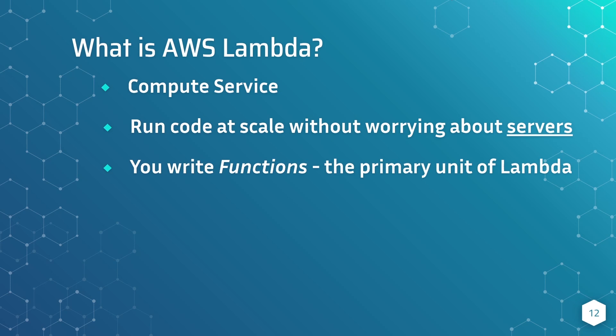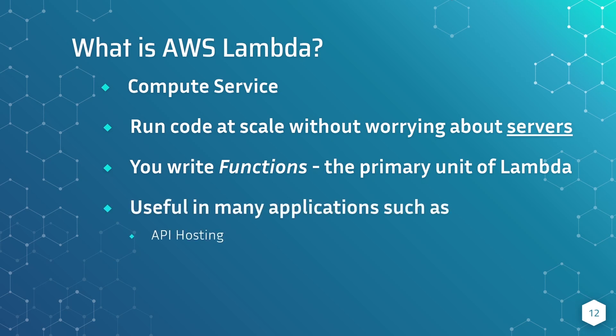You can have a function that hosts a REST API, a function that runs a nightly backup job — functions that are hundreds of lines long or only ten lines long. Basically, any reason you'd want to write code is a reason you can have a function. Functions are the lowest-level building block of Lambda — you create one, update one, modify one, deploy one. These are useful in many applications: API hosting, event processing, and ad hoc or timer-based jobs like a nightly database backup.